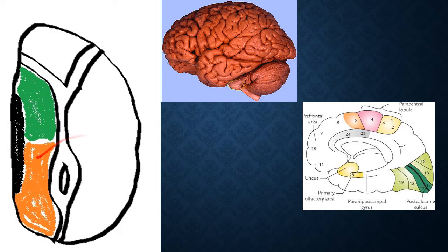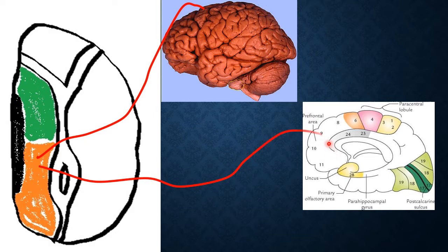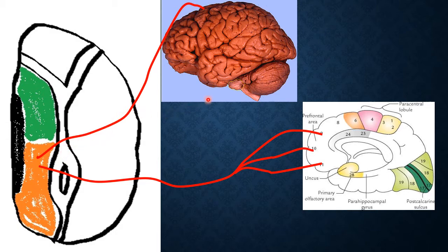The parvocellular part provides profuse reciprocal connections with the prefrontal cortex, including areas 9, 10, 11, and 12. The function of the dorsomedial nucleus is that it acts as an integrating center for somatic and visceral impulses. Through its connections with the prefrontal cortex, it provides mood or feeling tone to the emotional aspect of behavior.